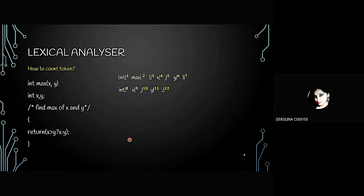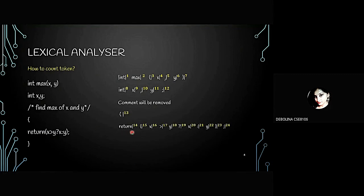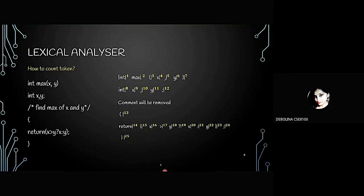As Ankit said, in a lexical analyzer we remove comments. So the comment is removed and not counted. The opening curly bracket is the thirteenth token. The return statement is the fourteenth token, then the opening bracket, 'x,' greater-than, 'y,' and the rest. When we count all of them we get 24 tokens, plus the closing curly bracket — giving us the total token count for this C program.